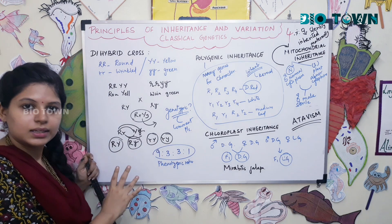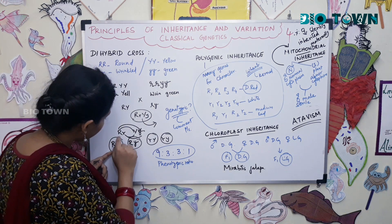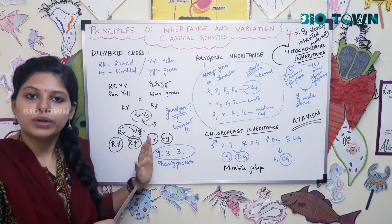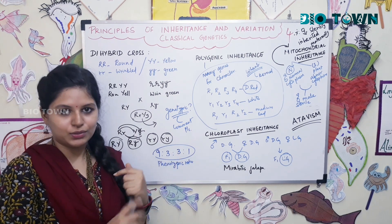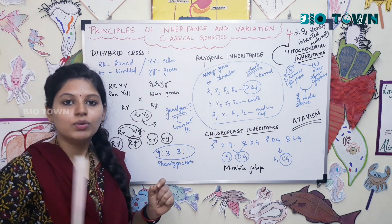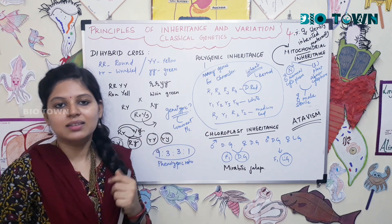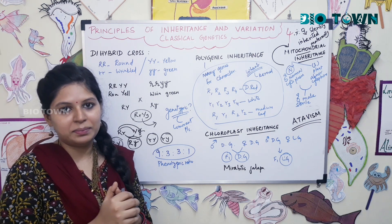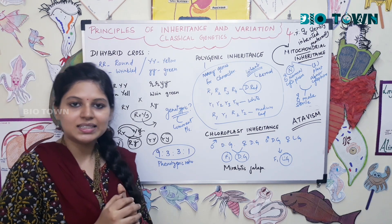In the Punnett square for the dihybrid cross you write: RY, Ry, rY, and ry as the gamete combinations. When you fill in the Punnett square, the phenotypic ratio is 9:3:3:1. The genotypic ratio is a very lengthy one. If you understood the co-dominance and monohybrid cross concepts, you should be able to work this out — comment in the comment section with the genotypic and phenotypic ratio so I can check.